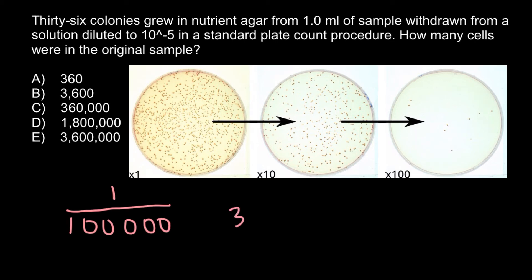Now we have to multiply 36 bacterial colonies, which represent 36 bacteria in the diluted solution, by 100,000. The answer would be 3,600,000.